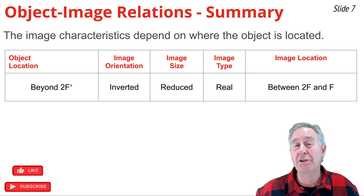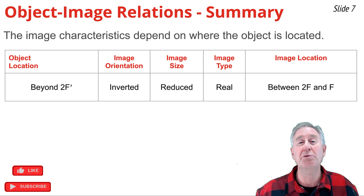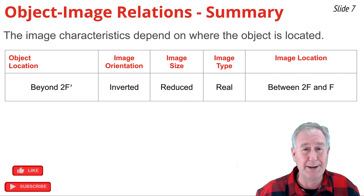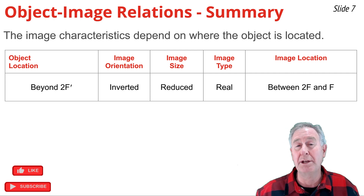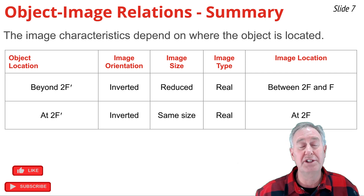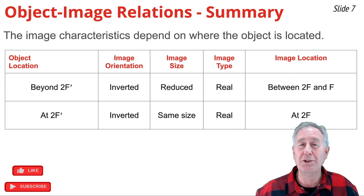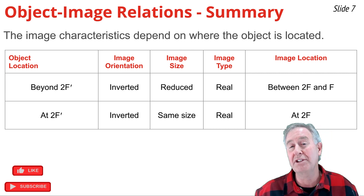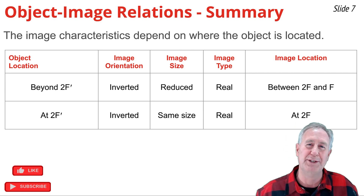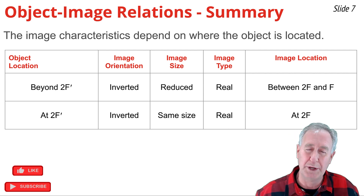Let's use a table to summarize what we've learned about object-image relationships for converging lenses. When the object is beyond 2F prime, the image is located between F and 2F on the opposite side — inverted, reduced, and real. When the object is exactly at 2F prime, the image is also exactly two focal lengths from the lens on the opposite side, the same size as the object, inverted, and real.